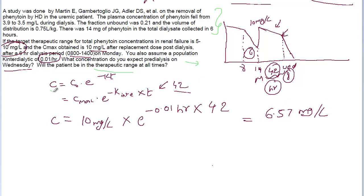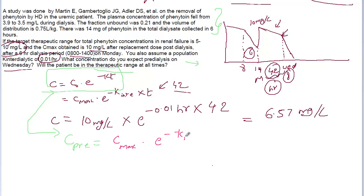Now let us write this equation using proper dialysis notation. C pre-dialysis = Cmax × e^(−k_interdialytic × t_between dialyses). This is the equation for the first question: what concentration do you expect pre-dialysis on Wednesday? We are expecting a concentration of 6.57 mg per liter.